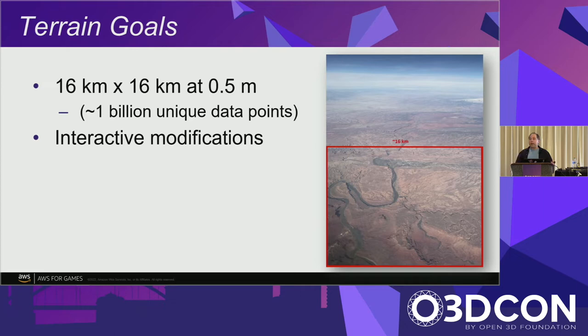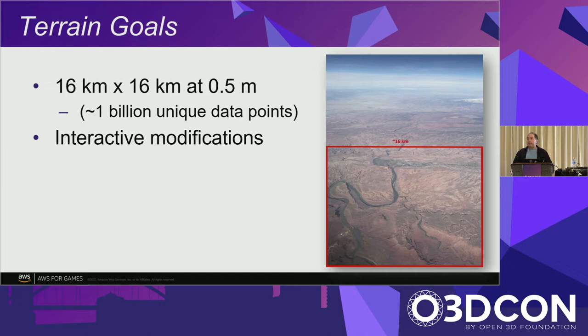The other goal is we set a target of supporting terrain sizes of at least 16 by 16 kilometers at half-meter resolution — about a billion unique data points. Why 16 kilometers? It's kind of a magic number in game development because we tend to store positions, velocities, and accelerations in 32-bit floating point numbers, and these start to degrade in precision. 16 kilometers is where game systems really start to break down. Most open-world games from Horizon Zero Dawn to Zelda: Breath of the Wild fit comfortably in 16 by 16 kilometers.